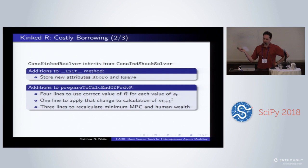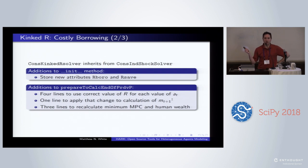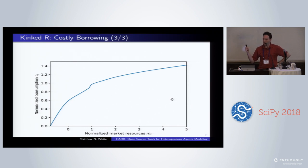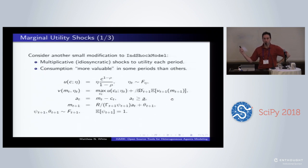In HARK, this takes about eight lines to add, by changing one or two methods — one of them just the initialization method to store the two interest factors. Out pops a consumption function that is kinked, where along that linear portion is where you're neither saving nor borrowing. If we want to add a different twist — maybe preference shocks where sometimes we see people spending a lot more in one week than another — it takes about 20 lines to stick that in.